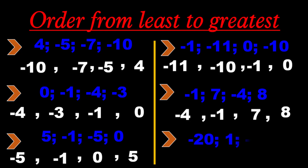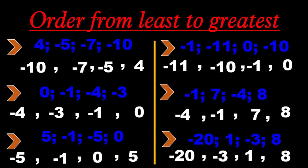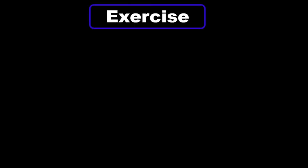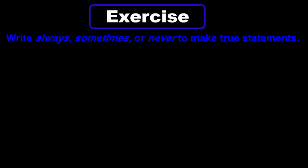Finally, the set: negative 20, 1, negative 3, 8. The smallest is negative 20, followed by negative 3, followed by 1, and the greatest is 8. We have one final exercise that you can try to solve by yourself.